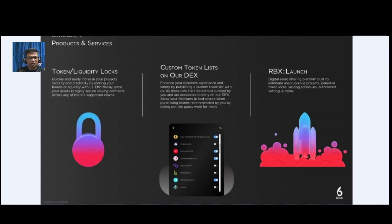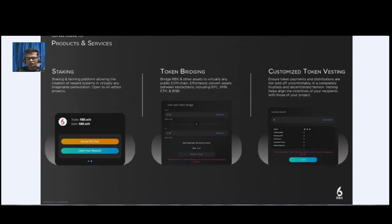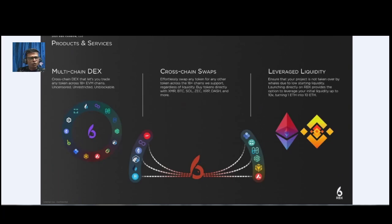Their services include liquidity lock, custom token list, HairDex, and RBX Launch. More services include staking, token bridging, and customized token vesting. Additional products include multi-chain DEX, cross-chain swap, and leverage liquidity.